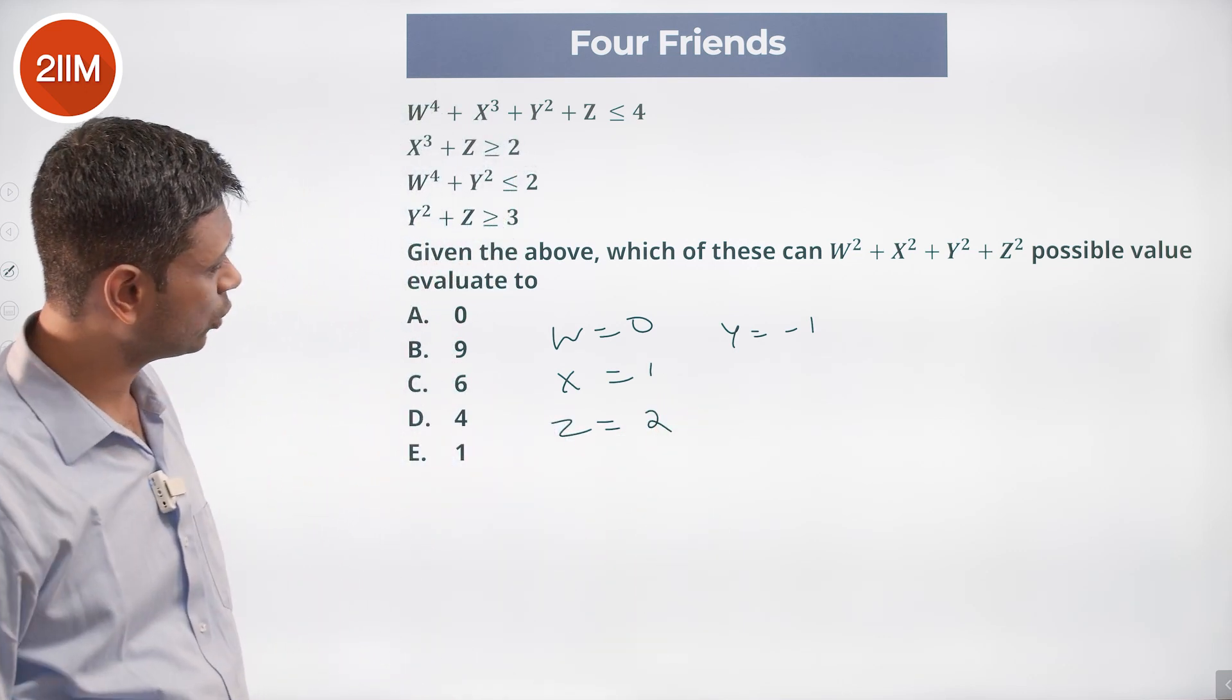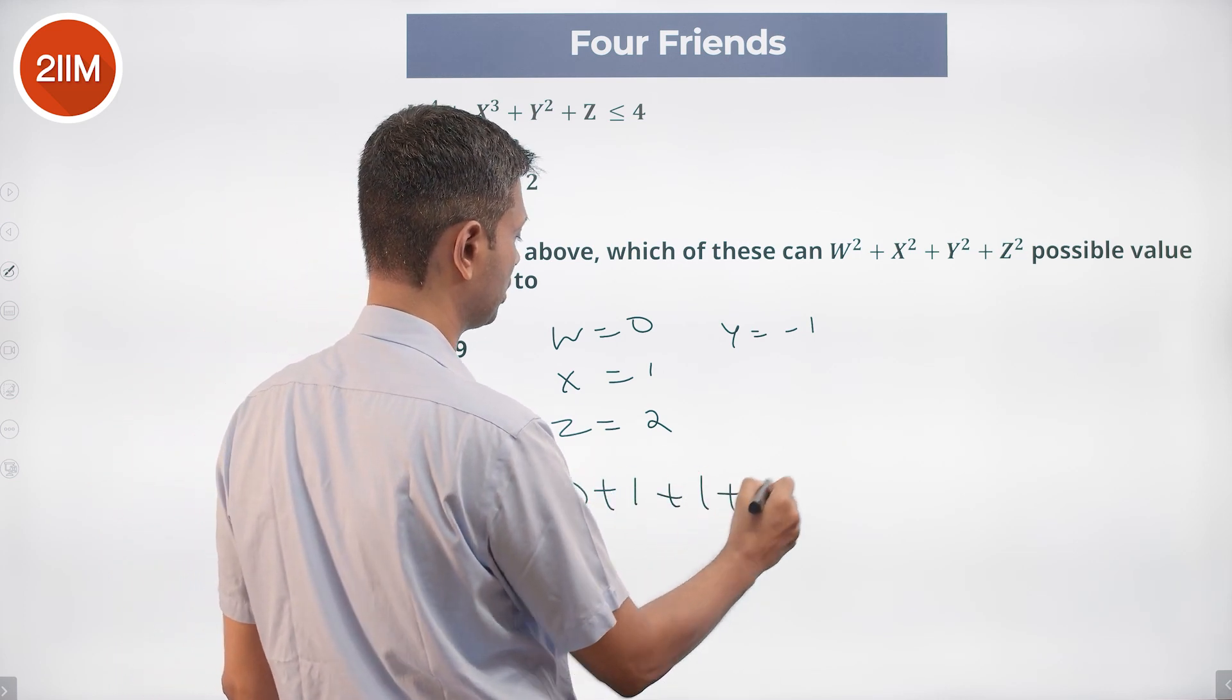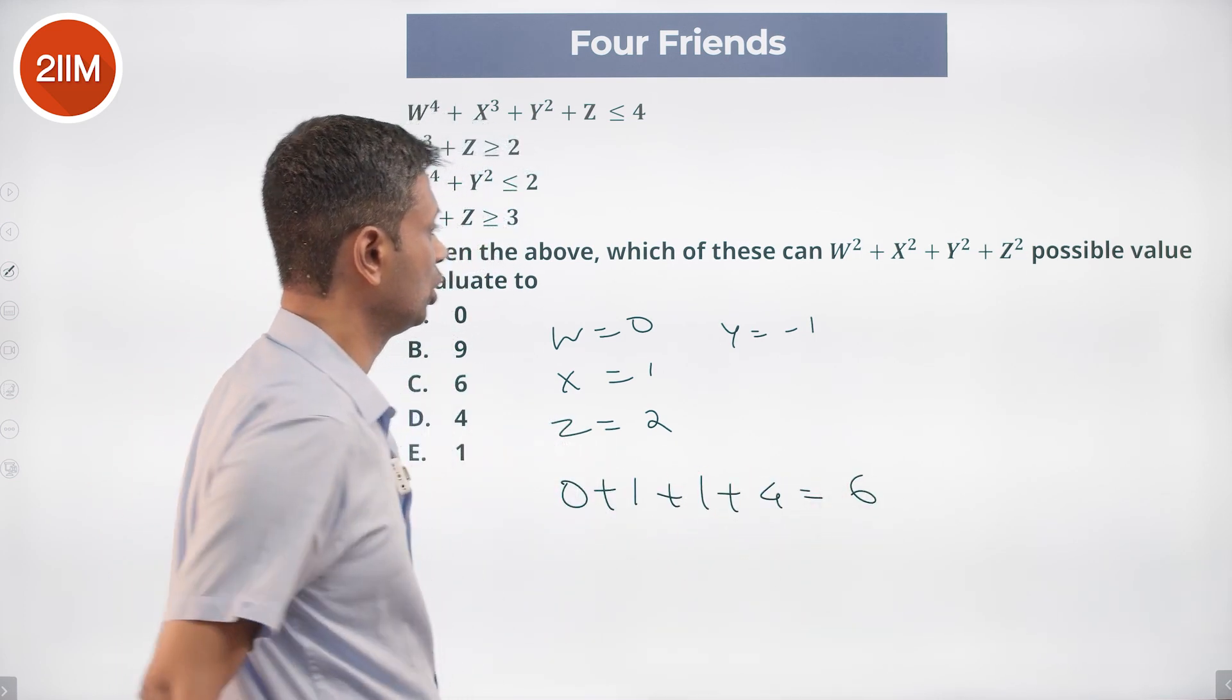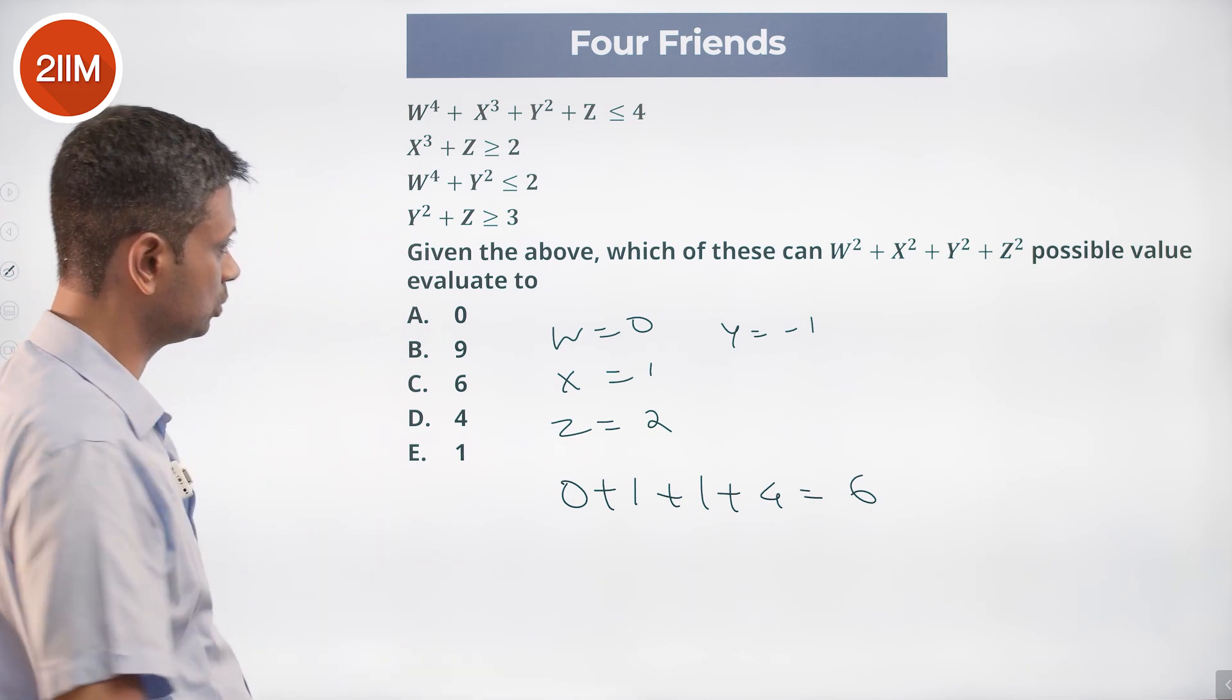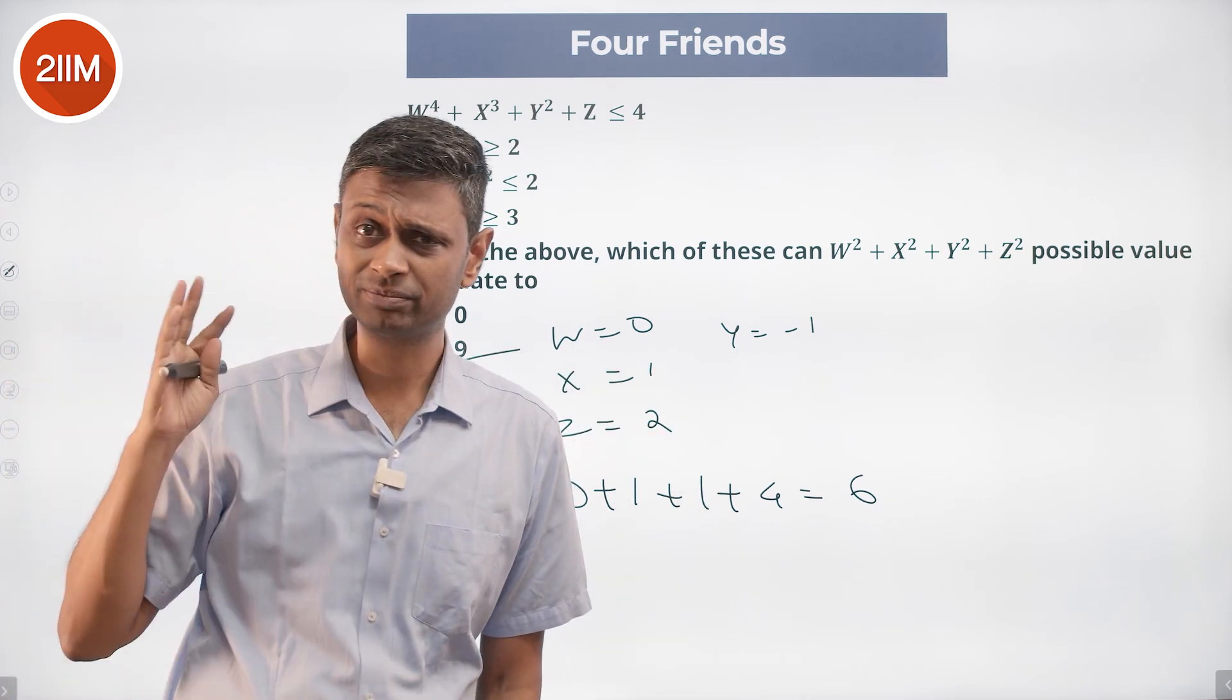W² + X² + Y² + Z² = 0 + 1 + 1 + 4 = 6. Possible values equate to only one value. We have got the value of everything. Nice, beautiful question.